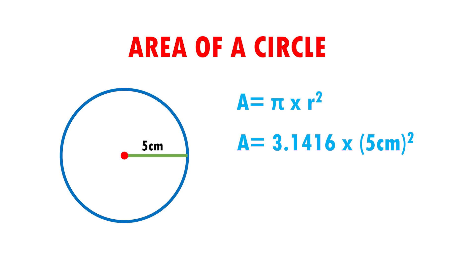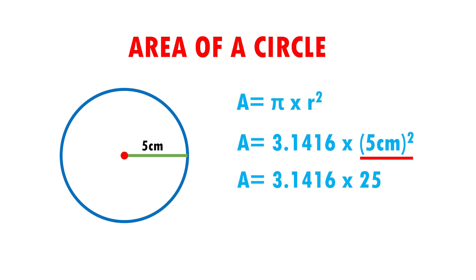Now, let's do the operations. First, I have to raise to the second power, so it remains as: Area equals 3.1416 times 5 centimeters squared, which is the same as multiplying 5 centimeters times 5 centimeters. 5 times 5 gives me 25, and centimeter times centimeter gives me centimeters squared.